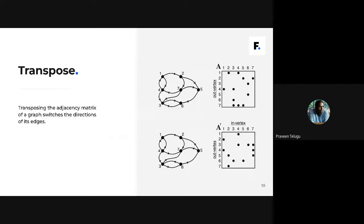Another common operation is transpose. Transposing a matrix means switching rows into columns and columns into rows. For a directed graph, what this corresponds to is reversing all the directions of the edges. So if you transpose an adjacency matrix, you are essentially reversing all the edges in the graph.